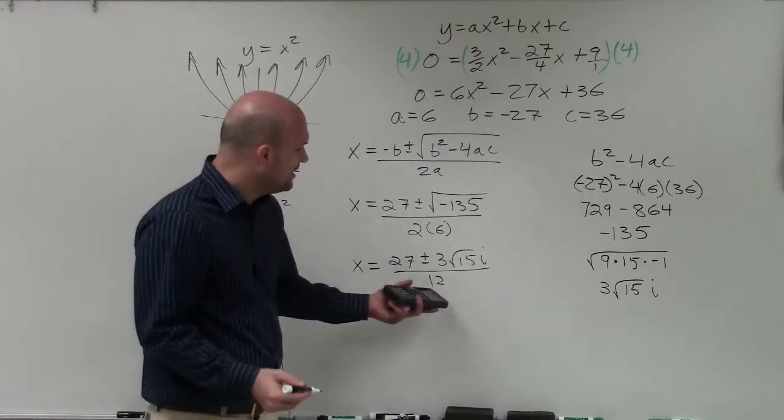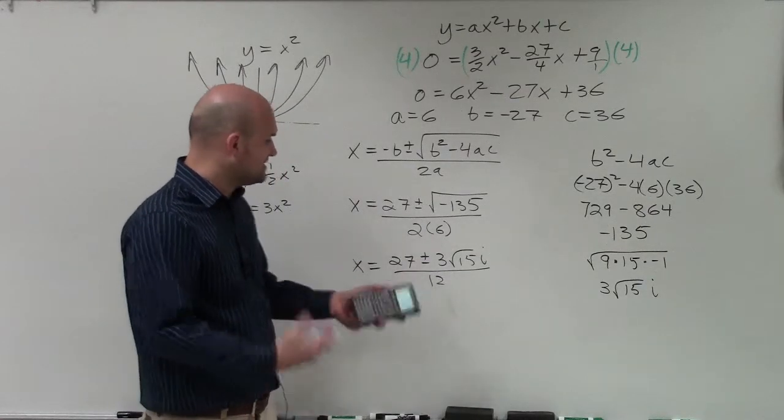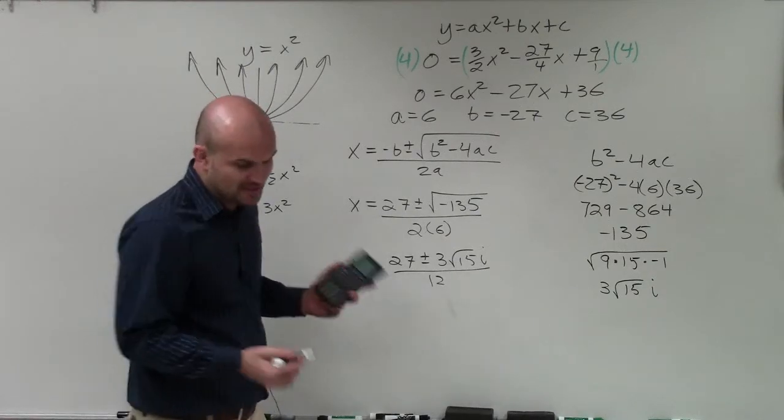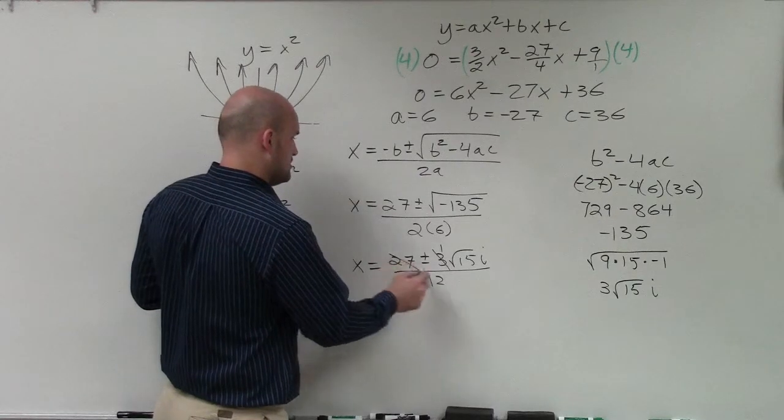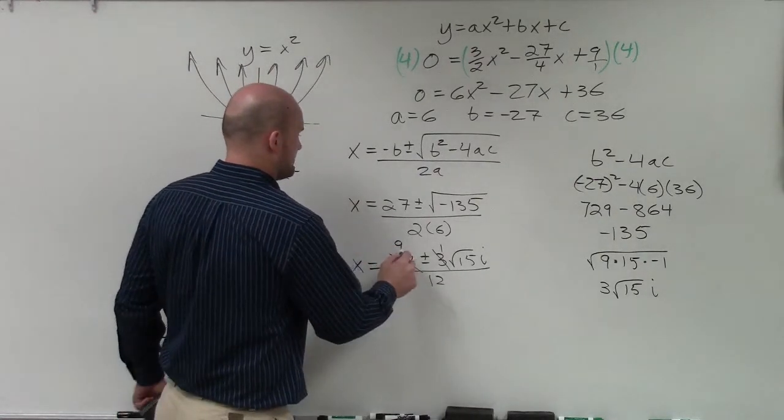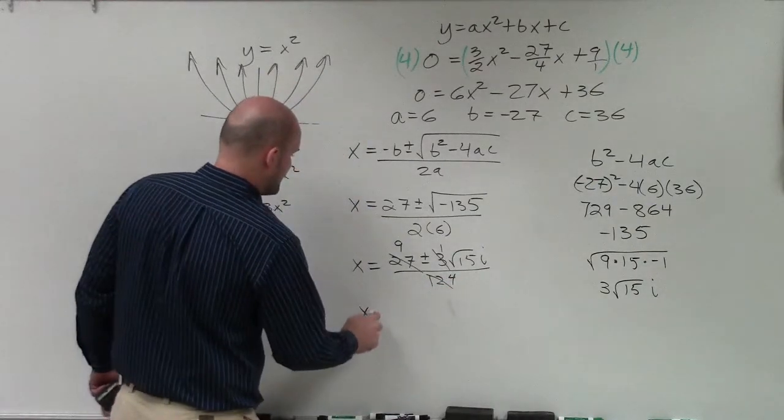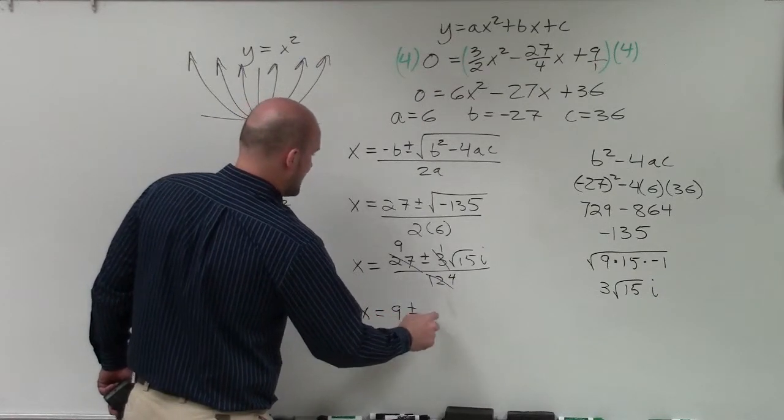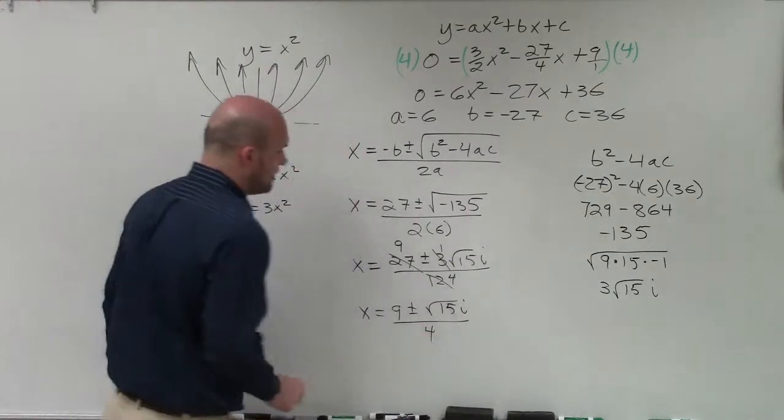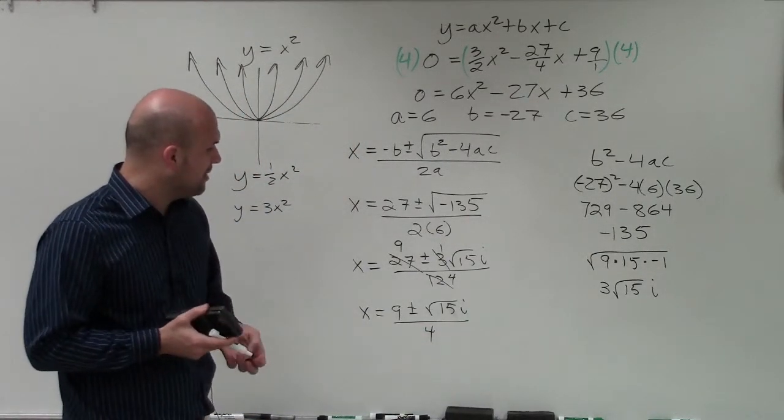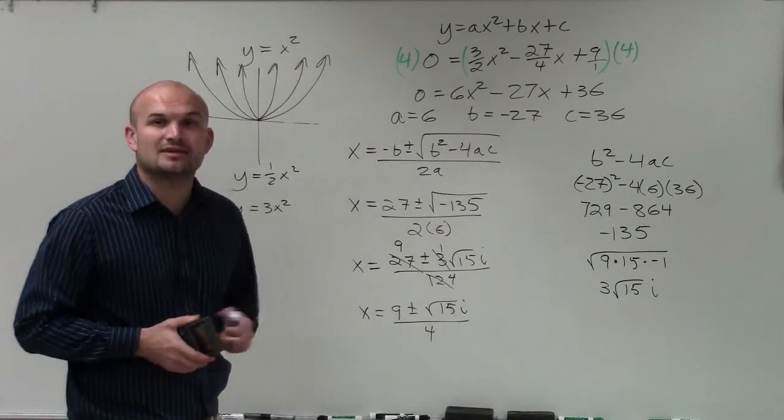And this is nice because now I can kind of simplify this and say, all right, what can I take out out of all these numbers and divide? And it looks like 3 is going to be my common number. So when I divide out a 3, that's going to be 9 plus 4. So therefore, my final answer is x equals 9 plus or minus the square root of 15i, all divided by 4. So there you go, ladies and gentlemen. That is how you find two imaginary complex roots applying the quadratic formula. Thanks.